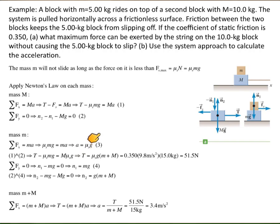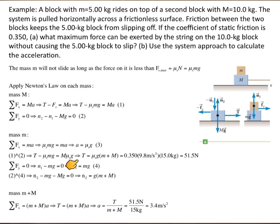Substituting A equals mu s times g into the first equation and solving for T, we get T equals the coefficient of static friction times g times the total mass. Plugging in all the given numerical values, the maximum tension — in order not to slide the small mass on top of the larger mass — is 51.5 newtons.